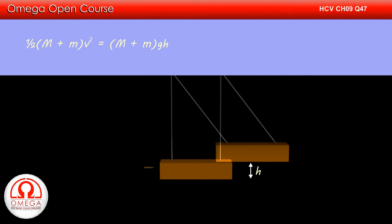Thus, the increase in gravitational potential energy must be equal to the initial kinetic energy of the pendulum-bullet system. Or, ½(M + m)V² must be equal to (M + m)gh. Simplifying, we get V² = 2gh, or V = √(2gh).